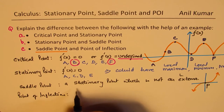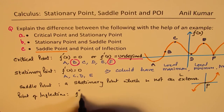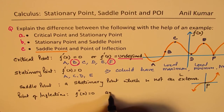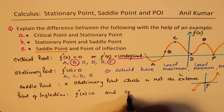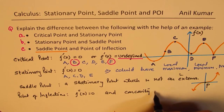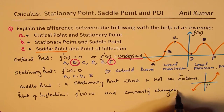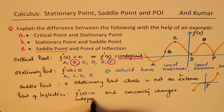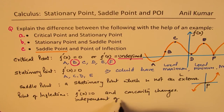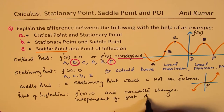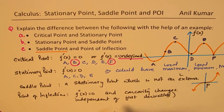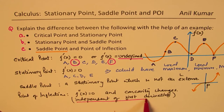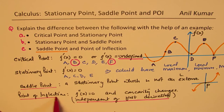Point of inflection is where the second derivative is equal to zero and the concavity changes. Point of inflection does not have to do anything with the first derivative — it is independent of the first derivative.